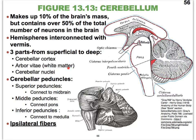The second sub-part is a bunch of white matter, but it's in the shape of a tree. In Latin, we call it the arbor vitae — the tree of life. And deep within this white matter, you can assume that there are nuclei, which we'll just call the cerebellar nuclei.